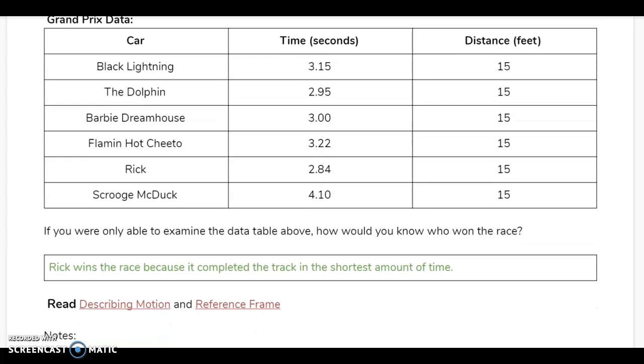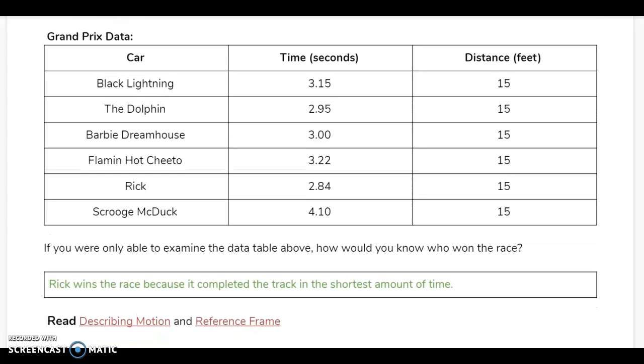This is a data chart from that race. Let's say we didn't see the race and the only thing that we had to go on to find out who won was this data table that lists the cars, the time that each car finished in, and the distance, which for each car was 15 feet because they were all on the same ramp. In order to tell who won the race, we would have to look at their times because they all went the same distance and we would have to see which one finished in the least amount of time. Here we can see that Rick finished in 2.84 seconds, so we know that he won the race because it took him the shortest amount of time.